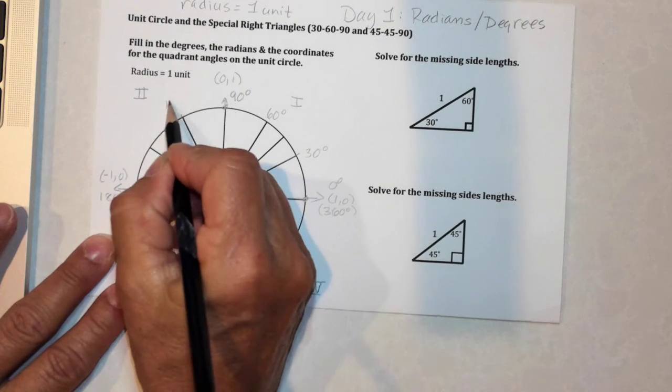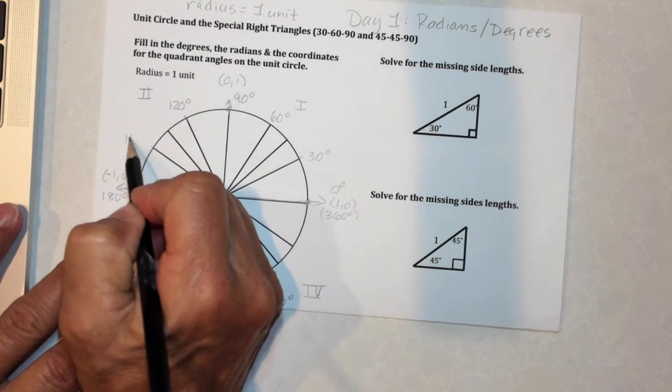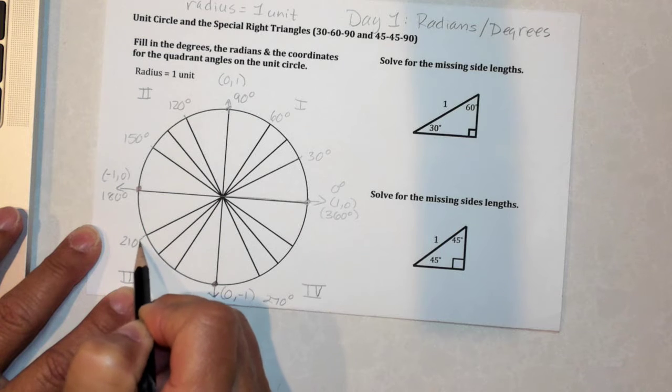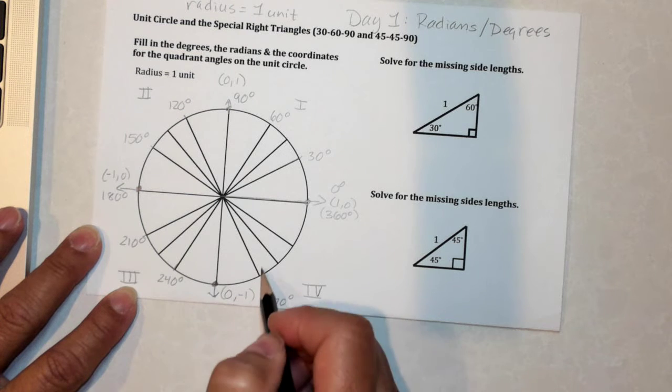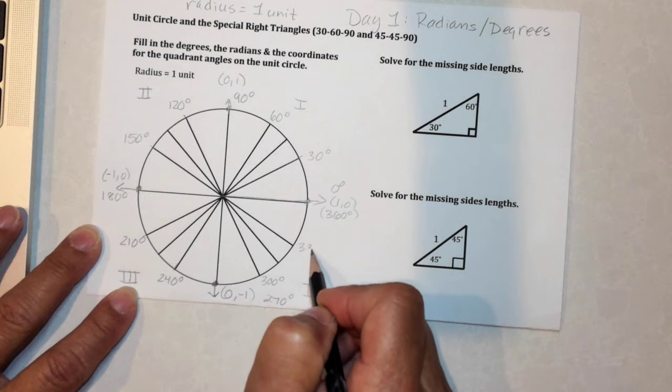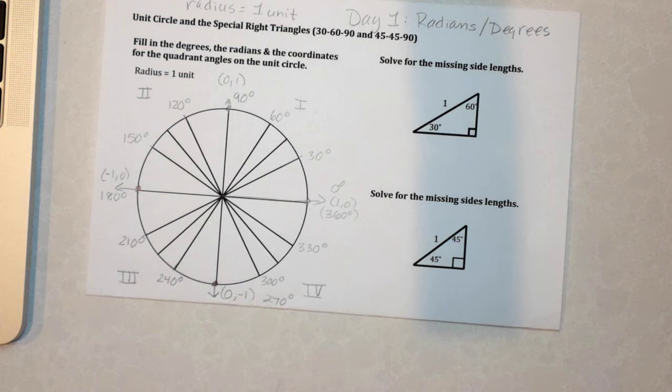30 more would put me at 120. I'm kind of ignoring these middle marks for right now to be honest. Coming down here that same amount would be 30 more. So 150. 30 more puts me at 180. 30 more puts me at 210. 30 more puts me at 240. And then again another 30 has got me at 270. 30 more puts this at 300. And then the next group of 30 puts me at 330. And then the last group of 30 puts me all the way around at 360. So those are going to be our 30 degree marks.